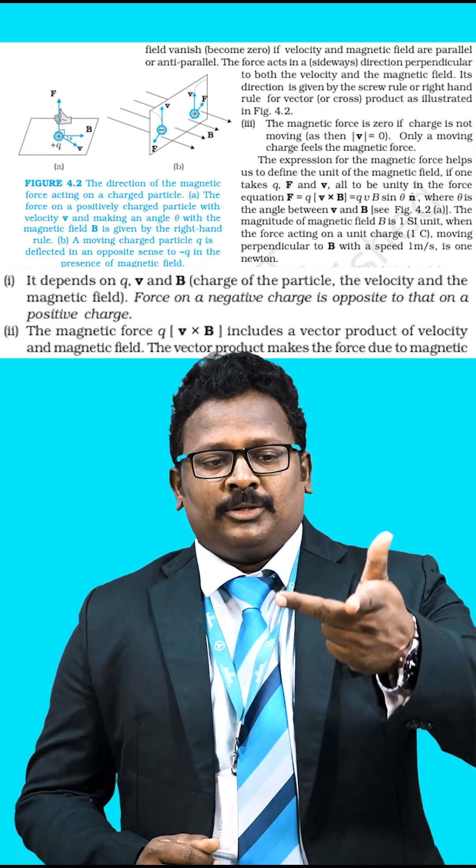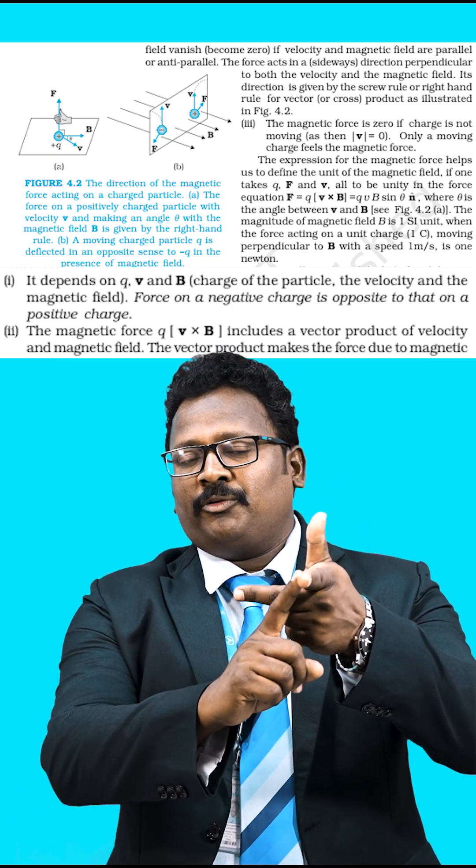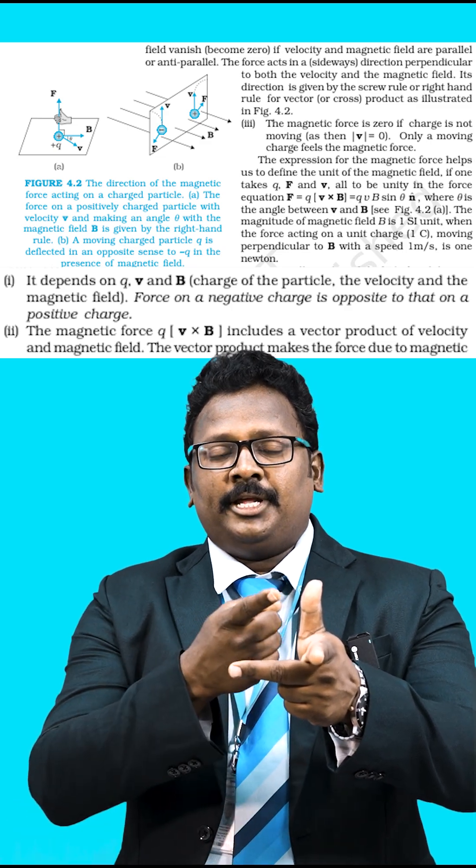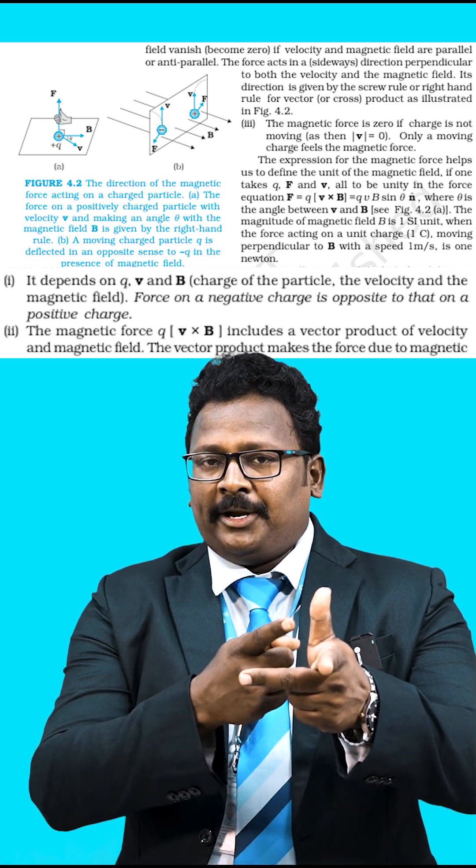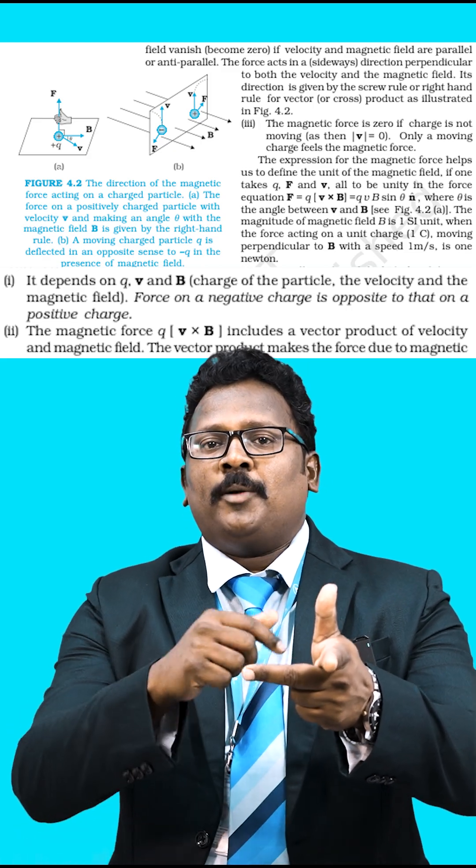Stretch your forefinger, central finger, and thumb of your left hand mutually perpendicular. Point your forefinger in the direction of the magnetic field, central finger in the direction of velocity of the charge. Then your thumb gives the magnetic force on a positive charge. If the charge is negative, the force will be opposite to the left hand thumb.